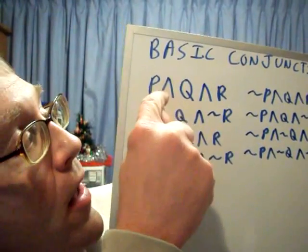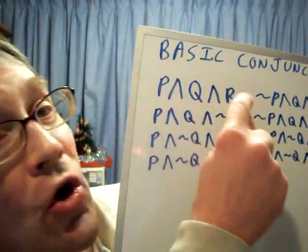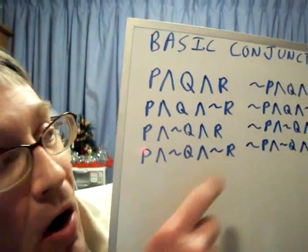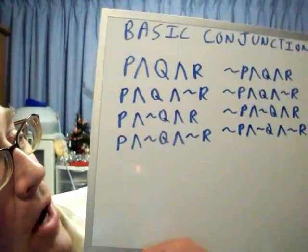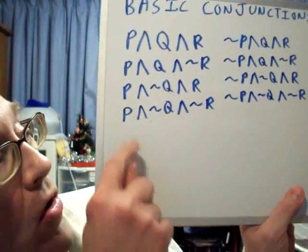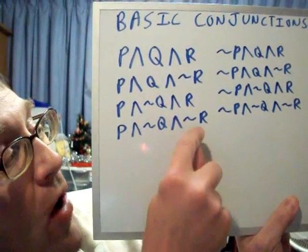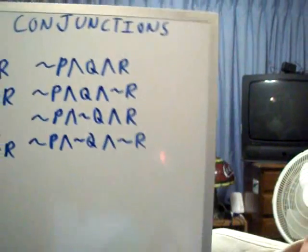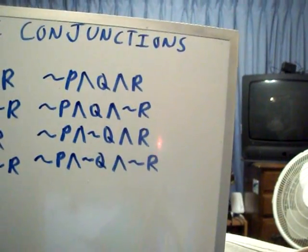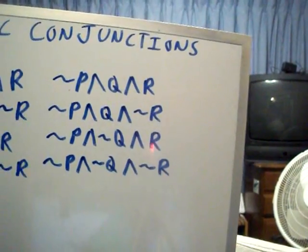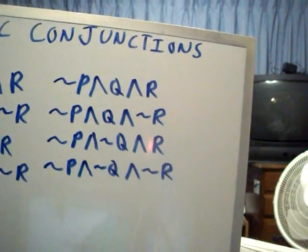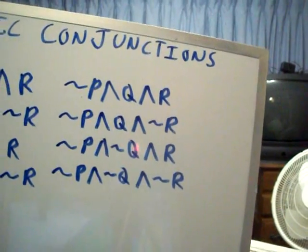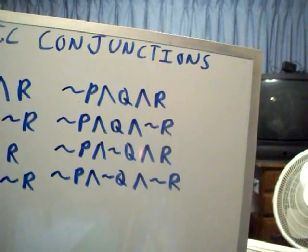You have P and Q and R. You have P and Q and not R. You have P and not Q and R. You have P and not Q and not R. You have not P and Q and R. You have not P and Q and not R. You have not P and not Q and not R.